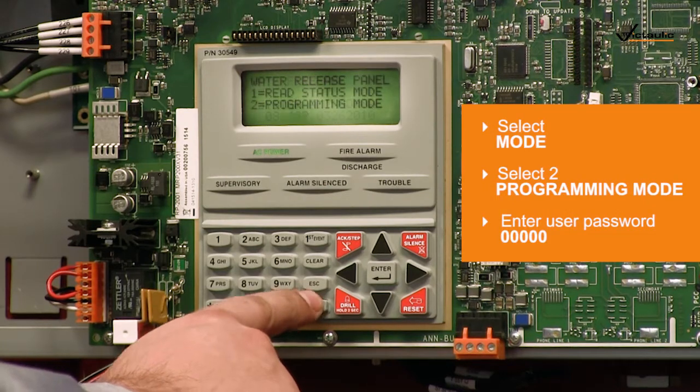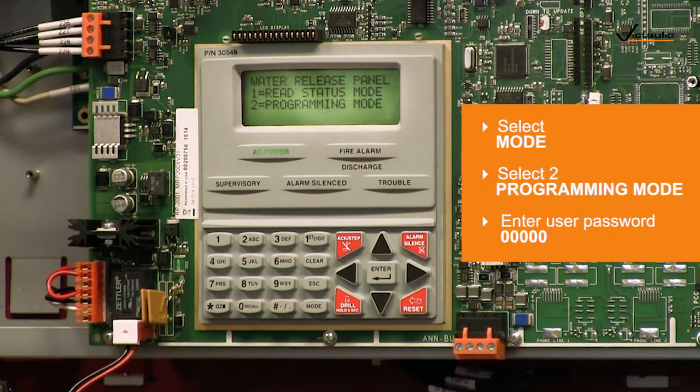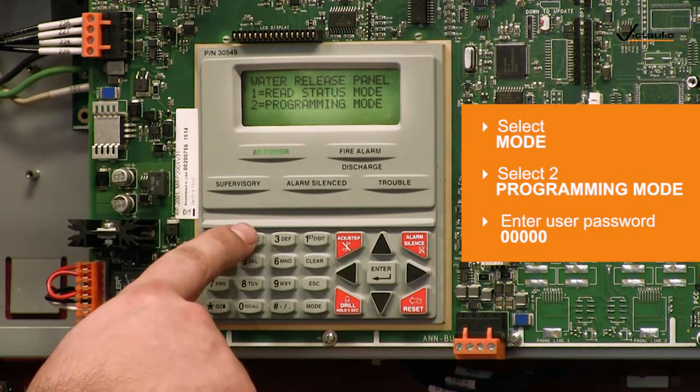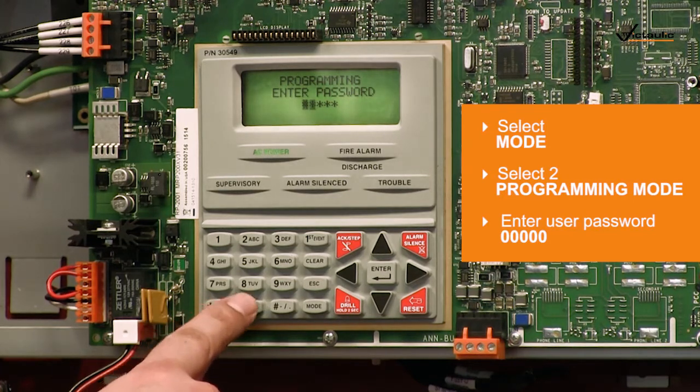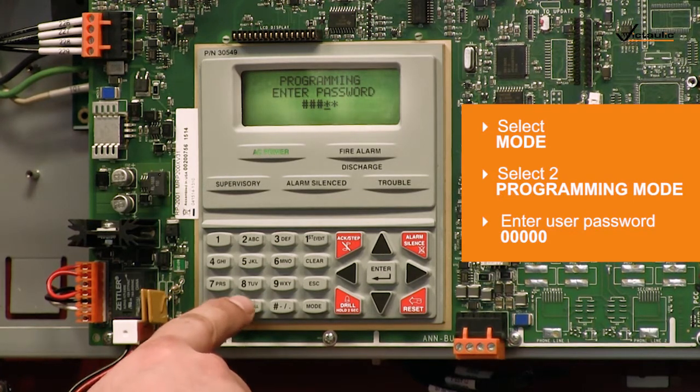To adjust settings, select Mode on the key panel. Next, select 2 for programming mode. Enter the 5-digit user password. Factory default is five zeros. The trouble light on the key panel will flash red when the password is entered correctly.